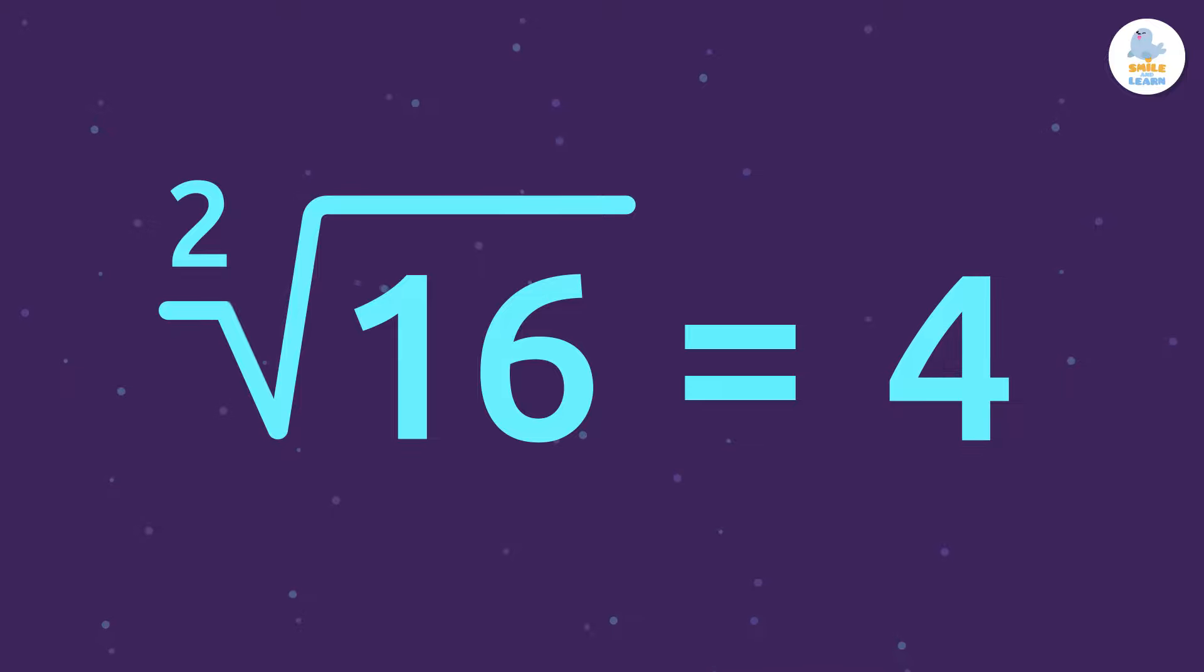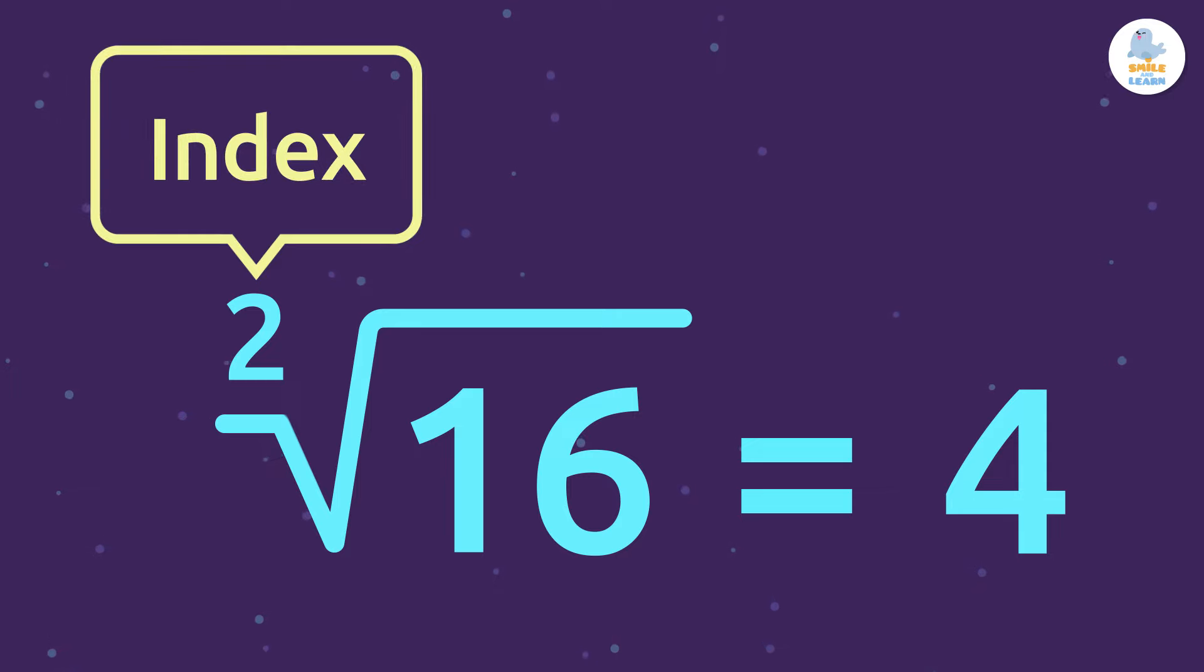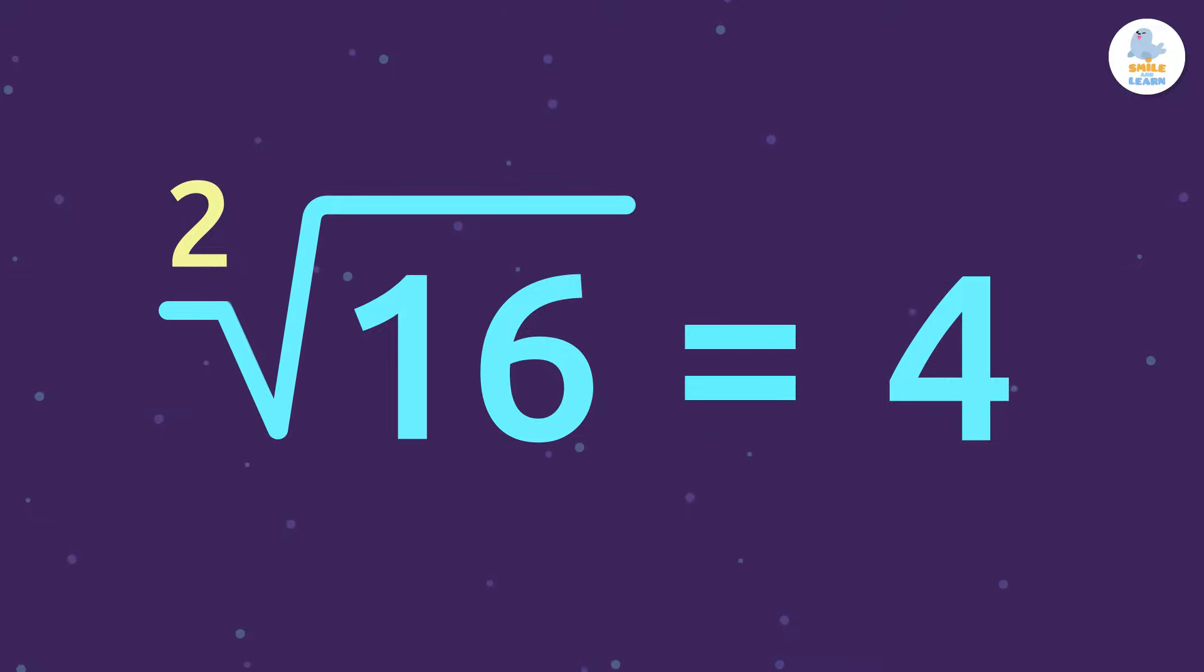A square root expression is made up of these parts. The first part is the index. In our case, we are looking for the square root, so our index is the number 2. We can also find other numbers in the index depending on the type of root it is.